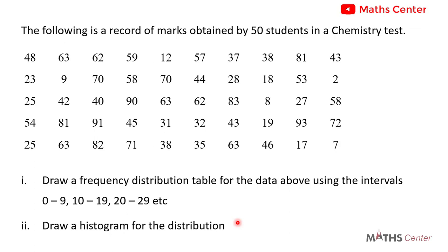In the previous introductory videos, I explained how to draw a frequency distribution table — that is, a grouped frequency distribution table for data like this. So I will assume that by now you know how to draw a grouped frequency distribution table for data like the one we have here, and I will go straight to the part of the table that we will need to draw the histogram. I will leave the link to those videos in the description. So let's move ahead.